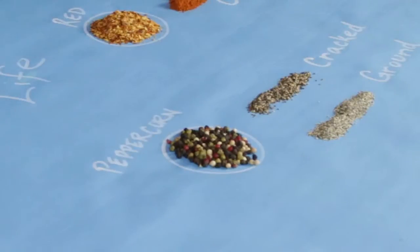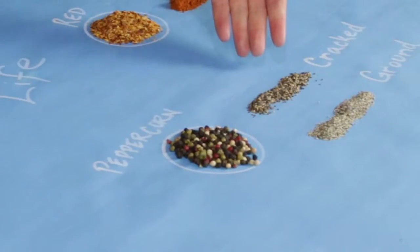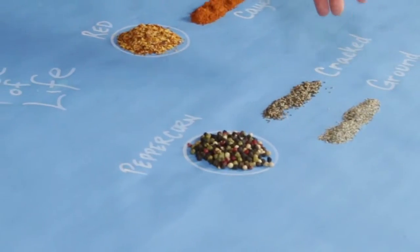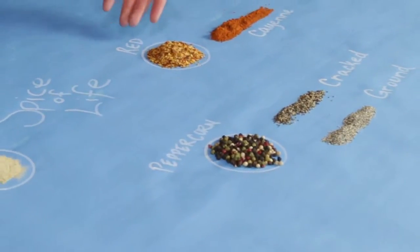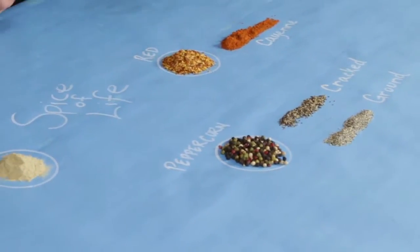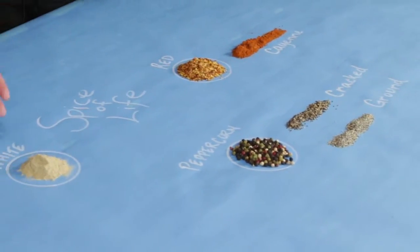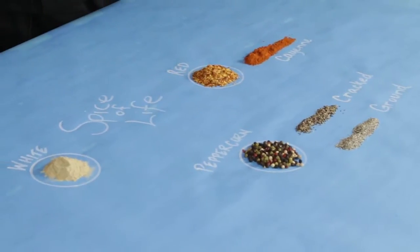I've got some cracked black pepper, some ground black pepper, some red pepper flakes, and some white pepper as well. The white pepper looks to be a little more like a powder — that's right.